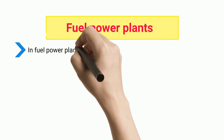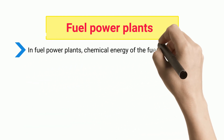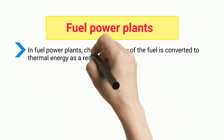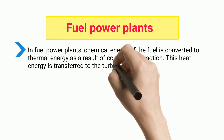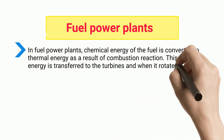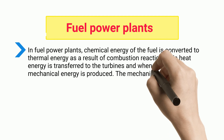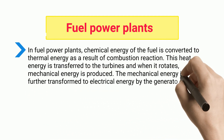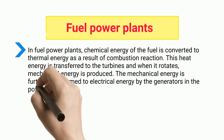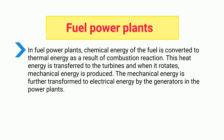In fuel power plants, the chemical energy of the fuel is converted to thermal energy as a result of a combustion reaction. This heat energy is transferred to the turbines and when it rotates, mechanical energy is produced. The mechanical energy is further transformed to electrical energy by the generators in the power plants.